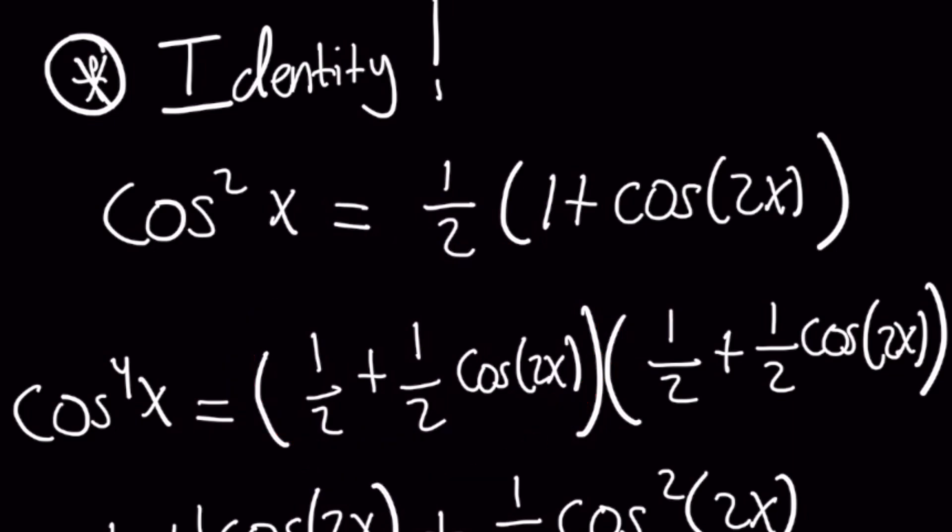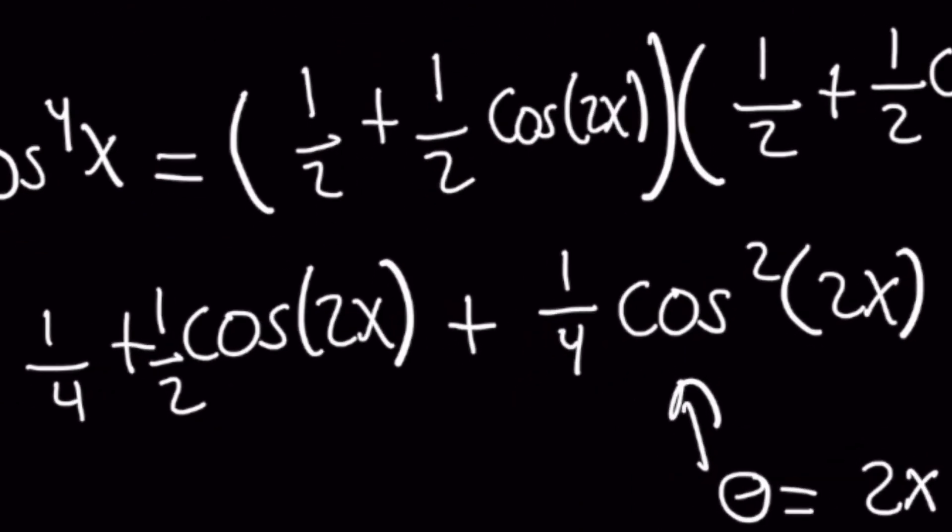Using the FOIL method, we're going to expand all the terms out, just like I would like to expand my channel, so hit that subscribe button below if you haven't already. We're going to get one-fourth plus one-half cosine of 2x plus one-fourth cosine squared of 2x.